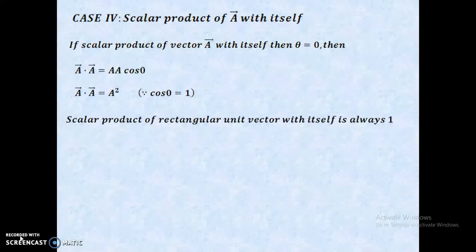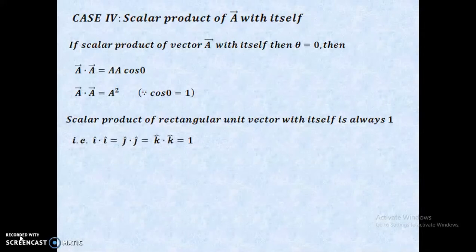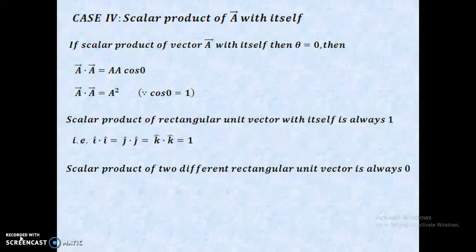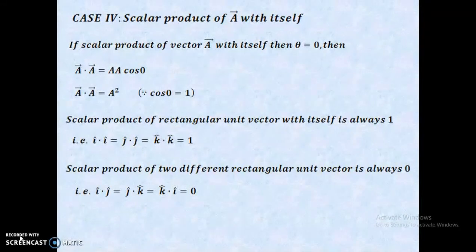The scalar product of a rectangular unit vector with itself is always 1. That is, i·i = j·j = k·k = 1. The scalar product of two different rectangular unit vectors is always 0, because they are perpendicular to each other. Therefore, i·j = j·k = k·i = 0.